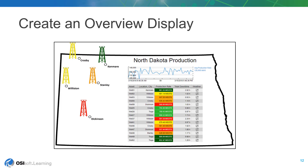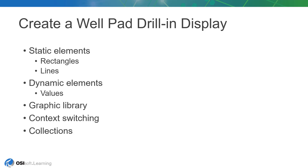In this lesson, we'll continue to work with the PI System data and build off the groundwork we laid in lesson three. The North Dakota overview display provided visibility into our operations from a very high level. But now, we'd like to take a microscope to this by building out a screen specific to our oil wells, the most discrete production component we have data for.